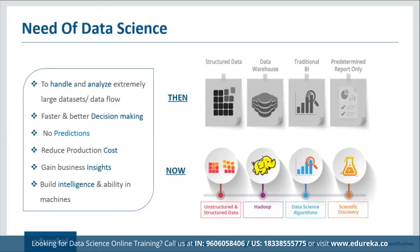Here's one more example. If you could understand the precise requirements of your customers from existing data — like their past browsing history, purchase history, age, and income — you had all this data earlier too. But now, with the vast amount and variety of data we have, you can train your model more effectively and recommend products to customers with more precision. This will bring more business to your organizations. This is where data science is actually needed.